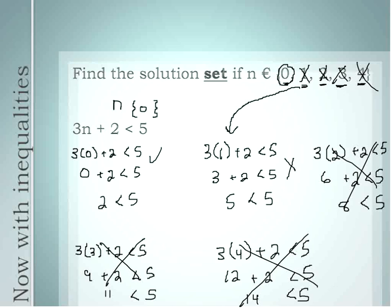So our solution set here — the only solution for n that works — is that n is equal to 0. The only time this inequality is true, using this replacement set, is for the number 0. In some cases, especially with inequalities, you'll end up having multiple answers that work, and you would list them all in order from smallest to largest. That's our lesson on replacement sets and solution sets. Hope it's been helpful. Have a wonderful day.